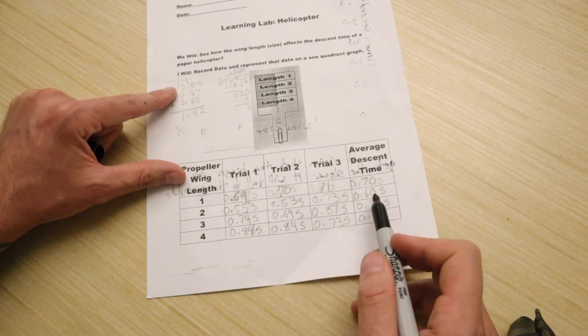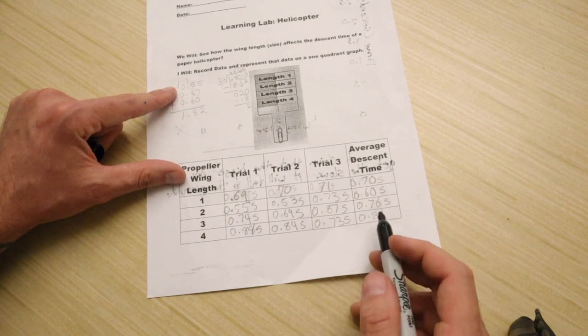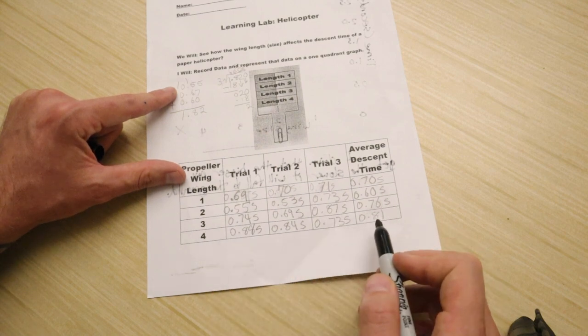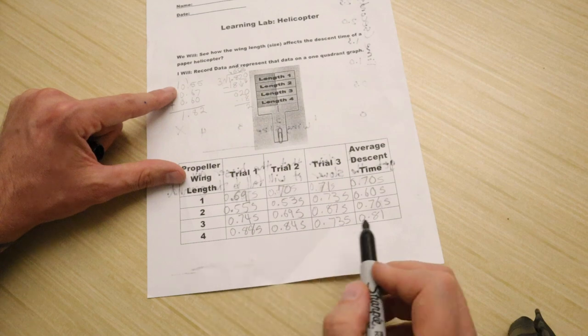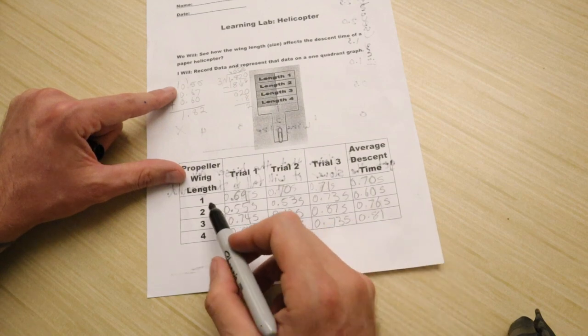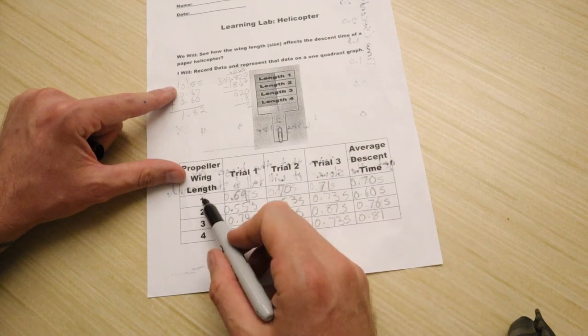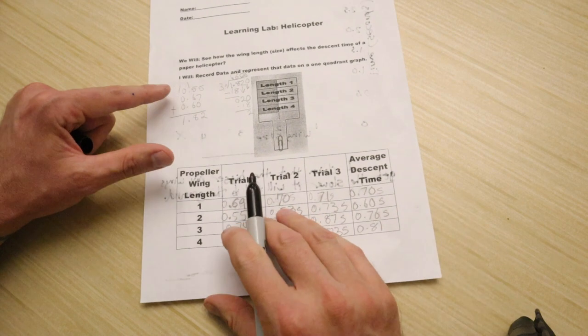So 70 seconds, 60 seconds, it got, it sped up there. But then it slowed down back again. Wing size 3, 0.76 seconds. Wing size 4. So my first coordinate, I'm going to find wing size 1 and 0.72 seconds. So here's my wing size 1. You kind of have to do some guesstimation here.